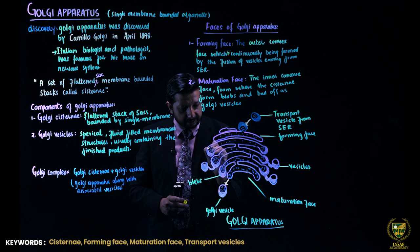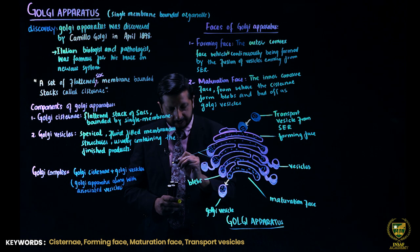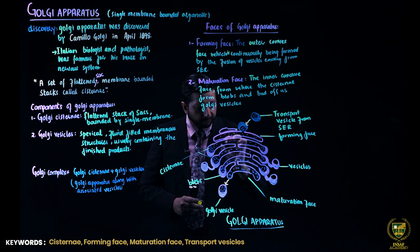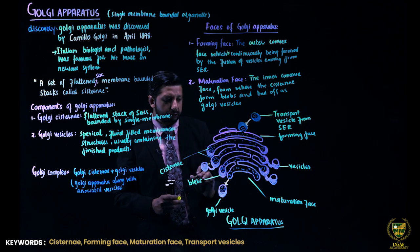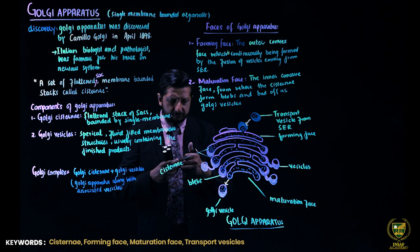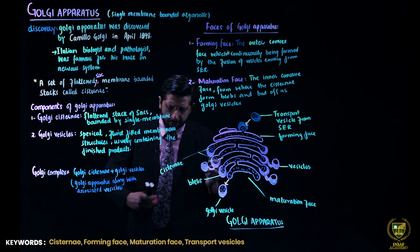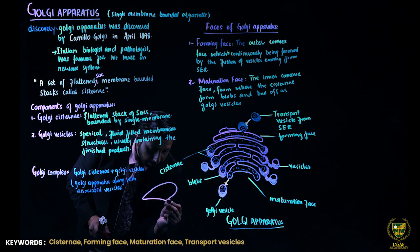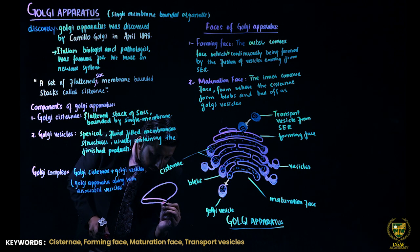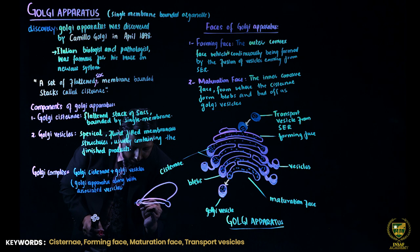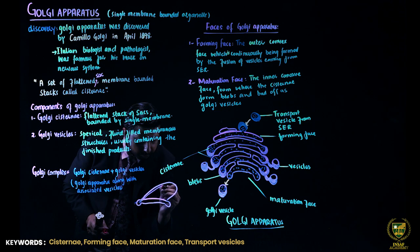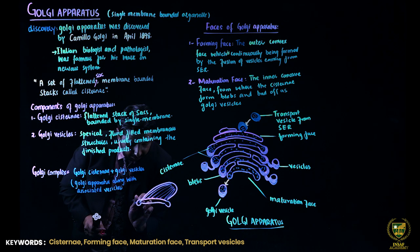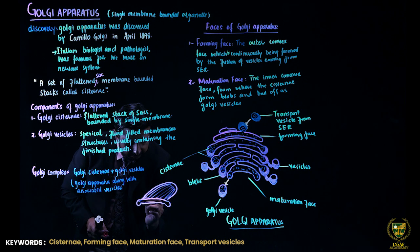These are the cisternae. This is flat, flattened sacks. For the sake of convenience, if I show one cisterna, this is a single sack, flat and bounded by membrane. And these are stacked, so a whole stack is made. That is basically the Golgi apparatus.